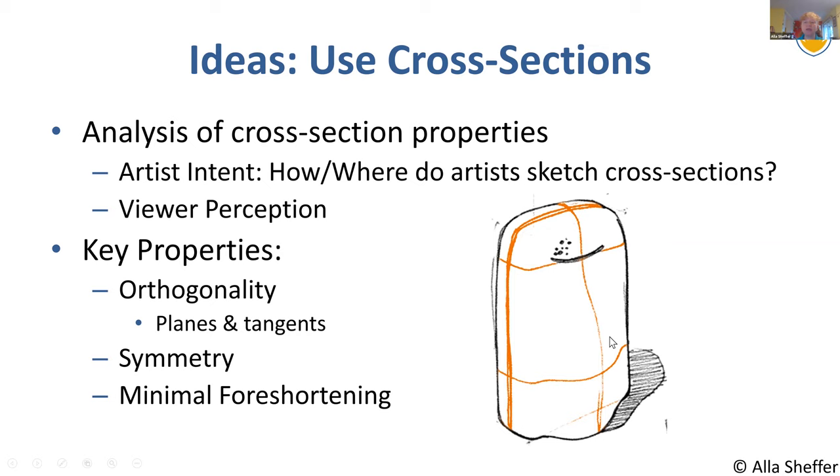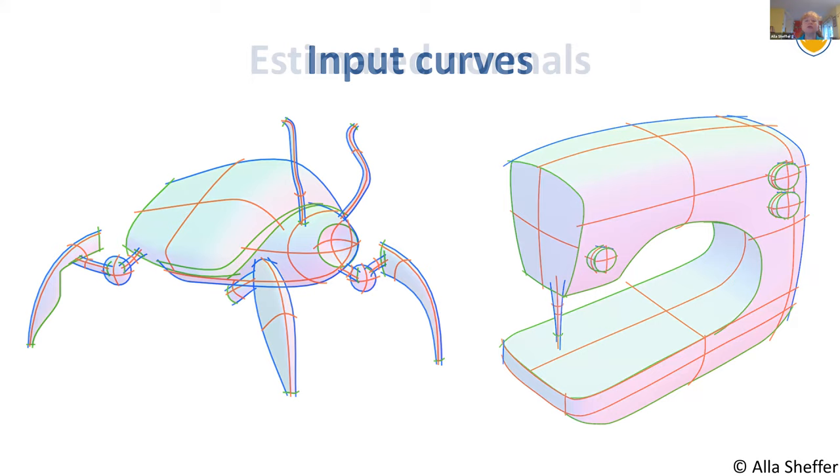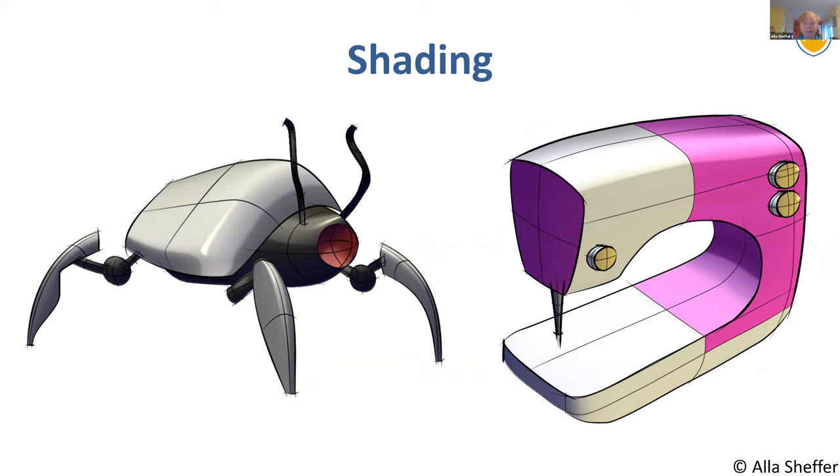And the core idea in this work was to look at how artists draw. Because the core assumption is when artists make certain drawing choices, they make them to make the drawing maximally clear to the viewer. So what we asked was, what do artists do in order to make their sketches effective? And what we noticed is artists use cross section lines in their drawings, and they use them a lot. And cross section lines are not random.